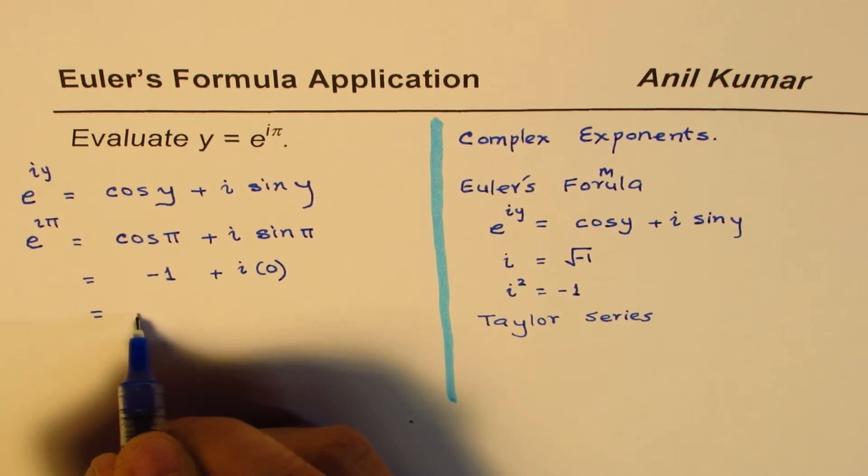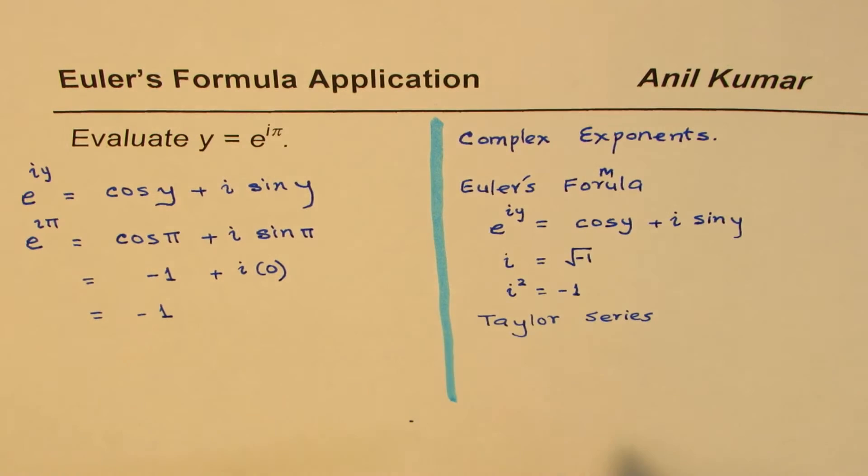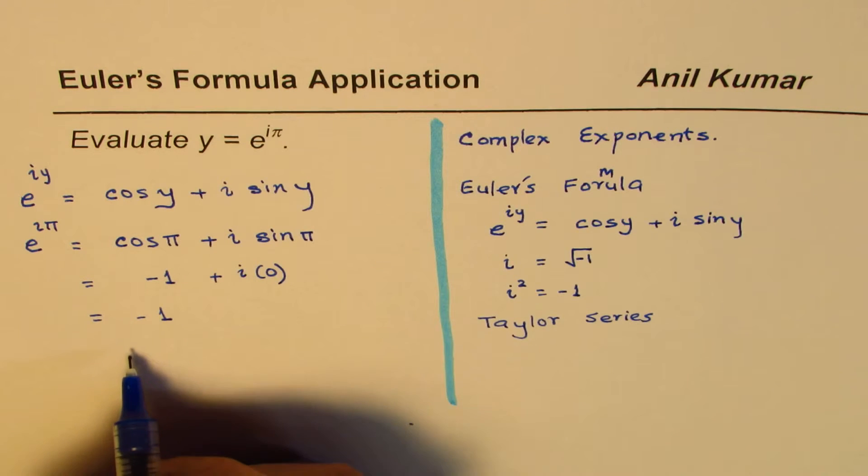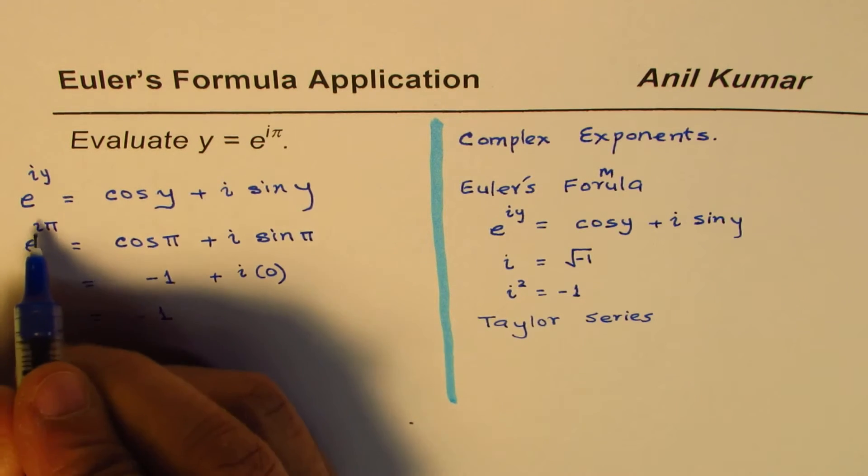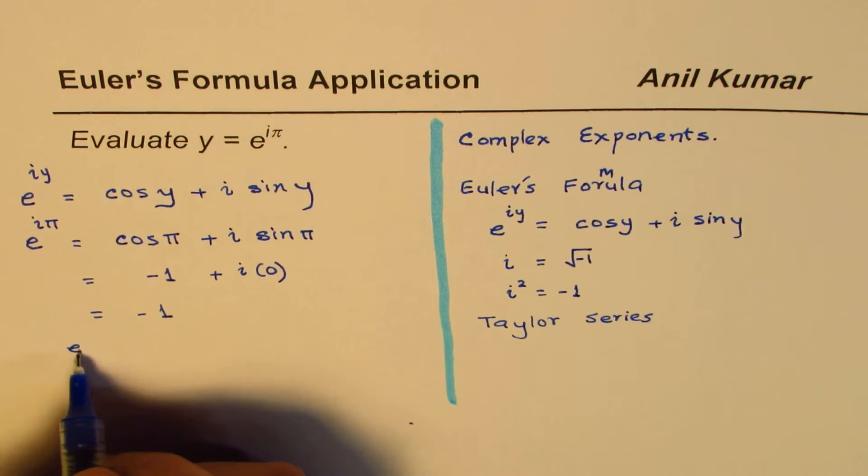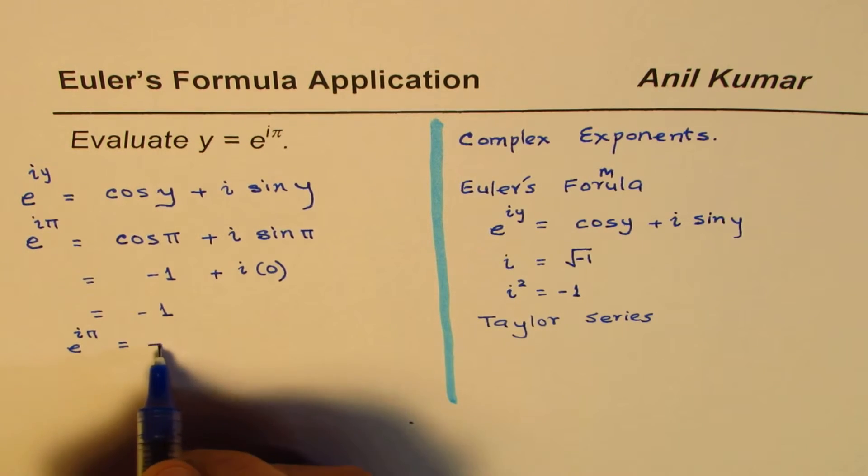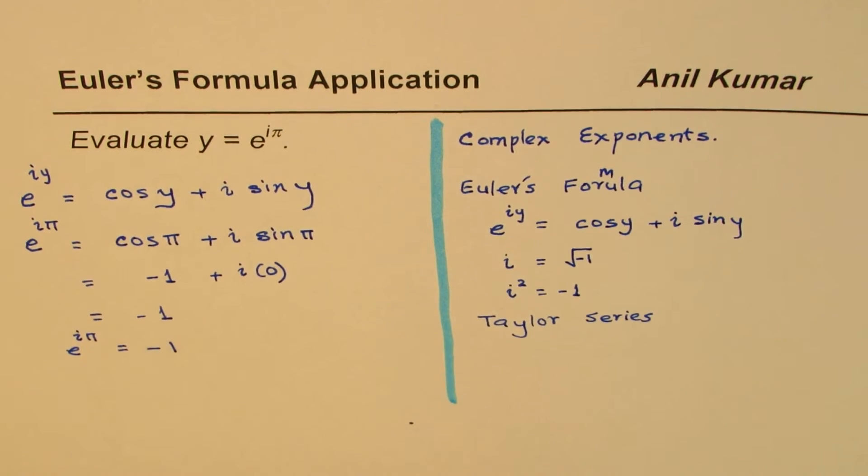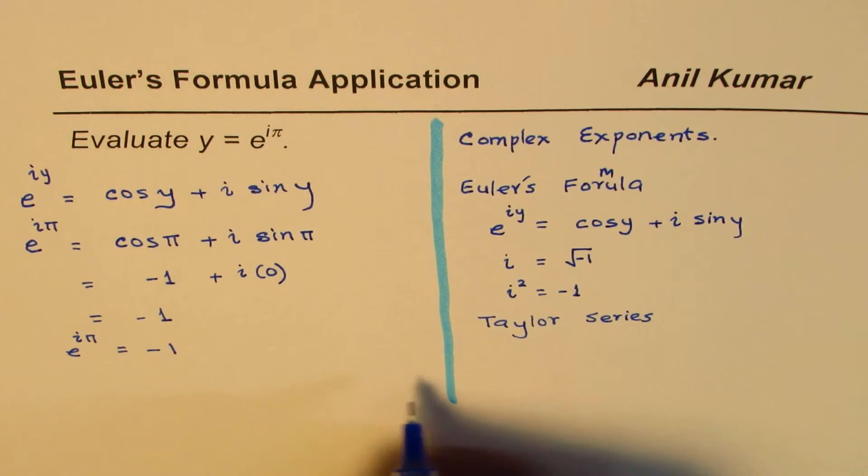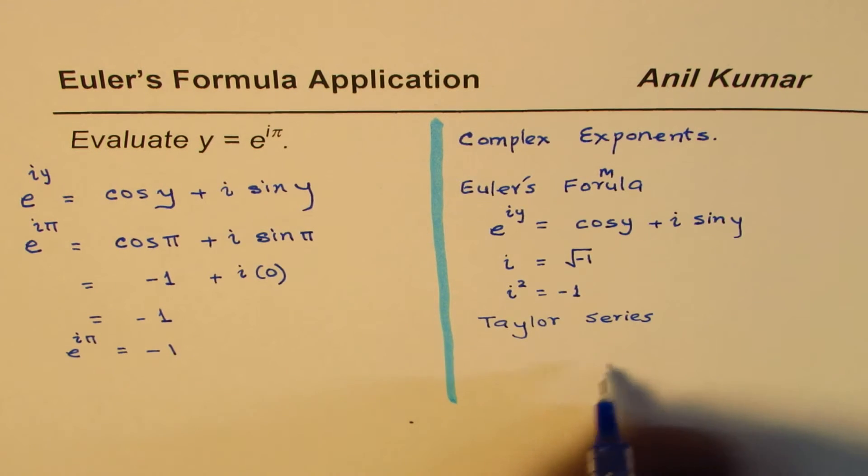And therefore, what we get is negative 1. So here is a very important result. We are saying e to the power of i pi equals to negative 1. So that is the answer, but here is the most important result. Let me write that result here, on this side.